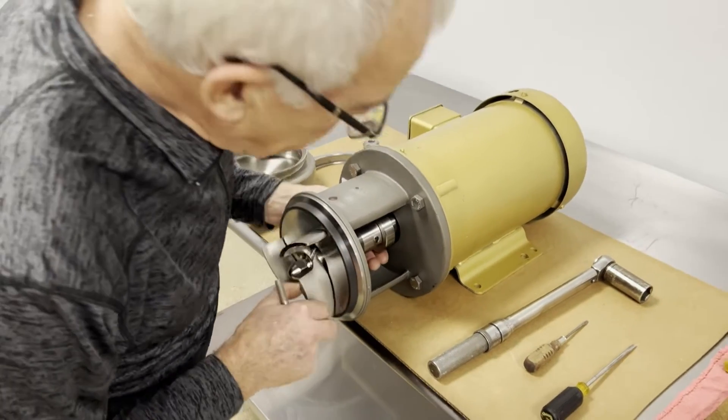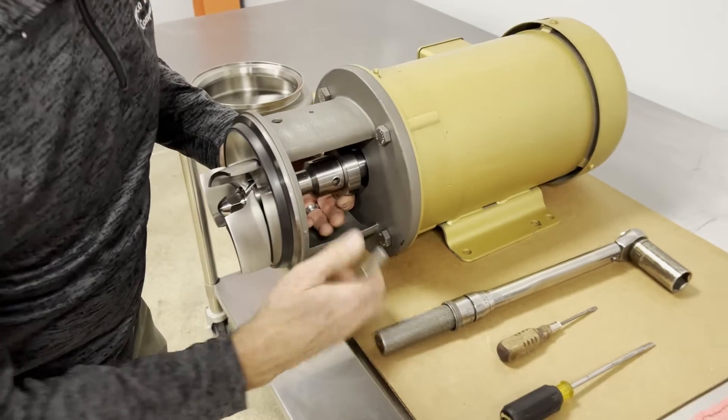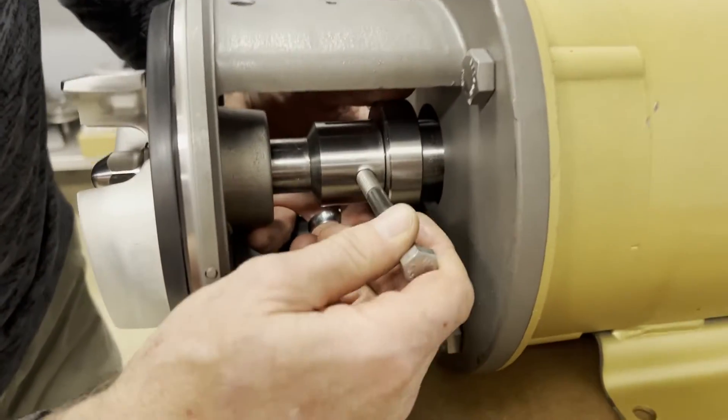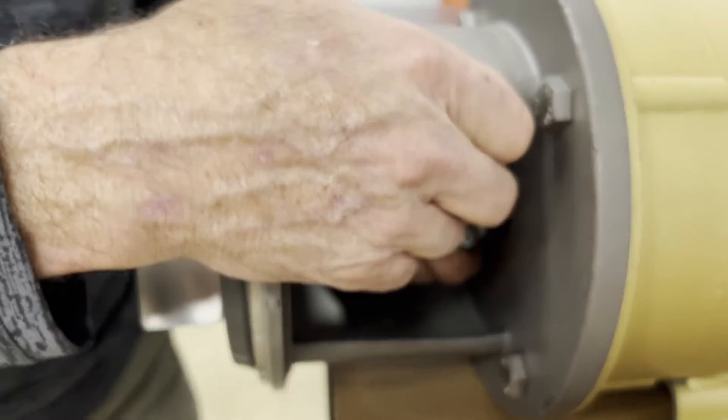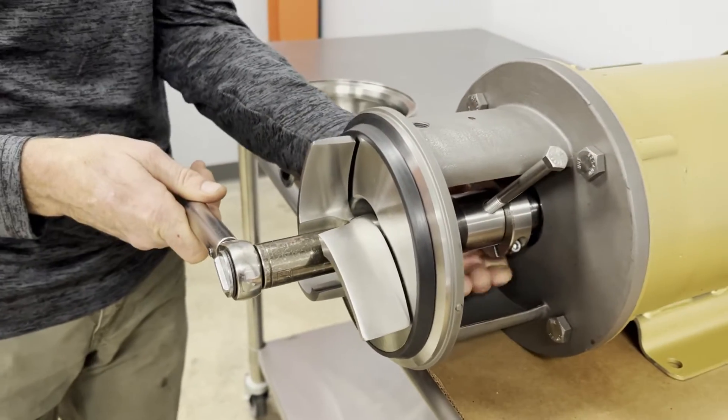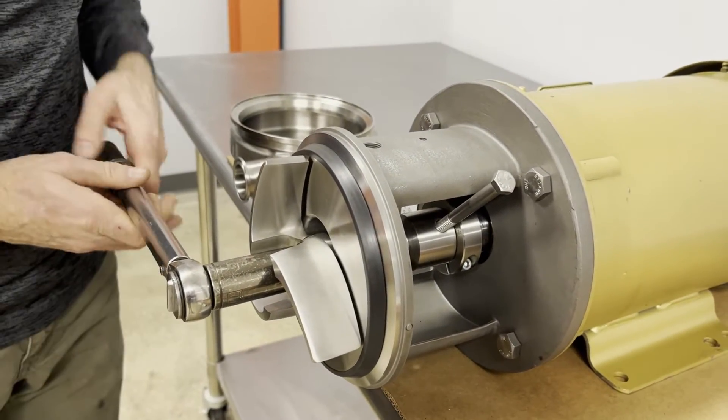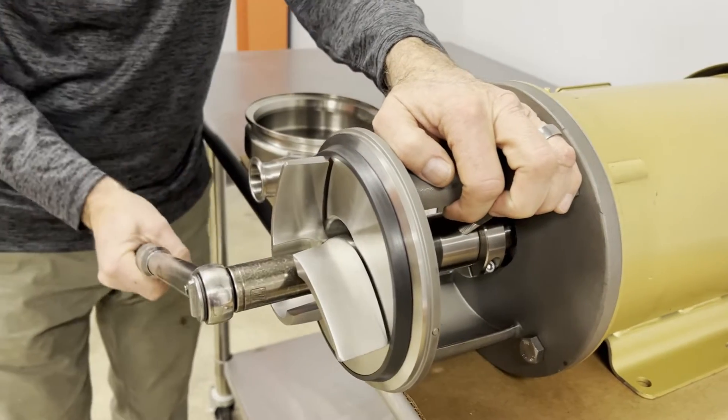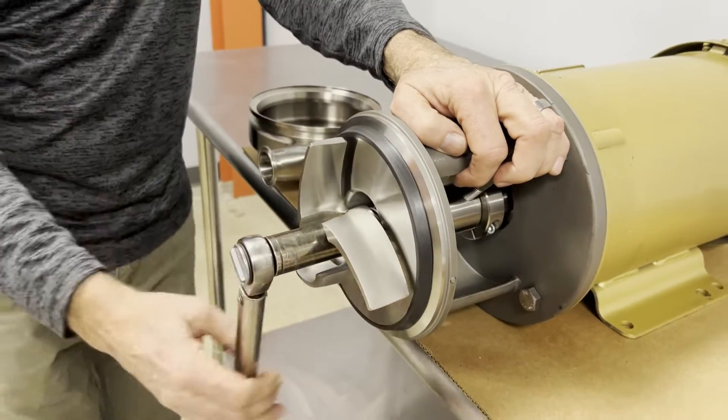In the stub shaft we have a three-eighths hole, and I'm going to put a three-eighths bolt in there to hold the shaft and then use my wrench to loosen the impeller nut.